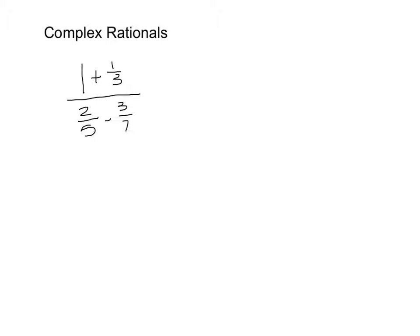What I like to do to simplify complex rationals involves simplifying the numerator, simplifying the denominator, and then carrying out the division problem. There are a lot of different ways to simplify complex rationals — it's what works best for you. I'm going to show you this method. If you find another method online somewhere, by all means use whatever you like best.